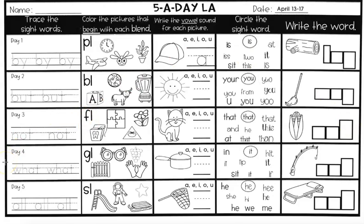Now we're on day four. We have the sight word W-H-A-T — 'what' — that you're going to trace in your best handwriting. Then color the pictures that begin with the blend G-L. We have gate, glasses, grape, and gloves. Two of those have G-L at the beginning — glasses and gloves.